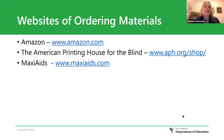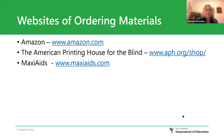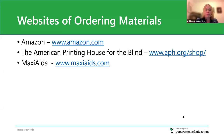For ordering, the top three websites are Amazon, the American Printing House for the Blind, and Maxi-Aids. Most of the materials shared today can be found through one of these three sources.